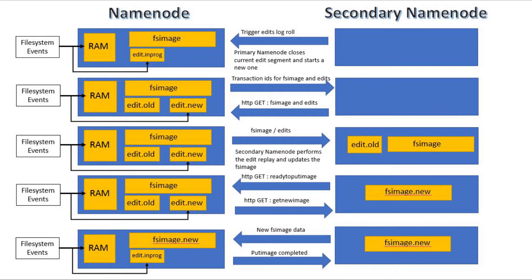The primary name node also returns the transaction ID of the latest FS image and the edit log segment that was just closed. Using these IDs, the secondary name node fetches the latest FS image and the required edit segment using HTTP GET protocol. Once the secondary name node receives the FS image and the edit segments, it replays the edit logs and updates the FS image file system state. It then sends another HTTP GET message to inform the primary name node that the edit roll is complete.